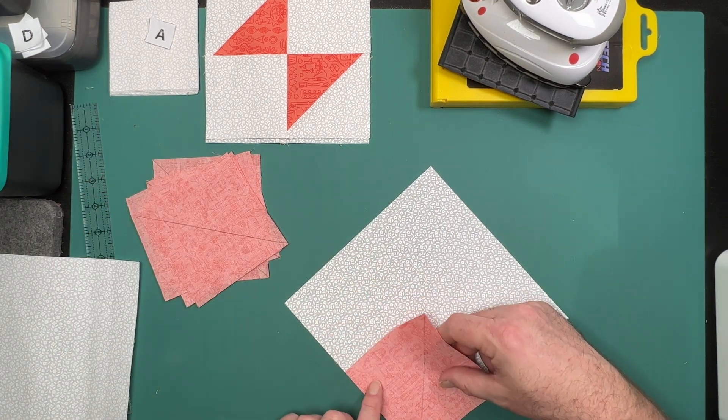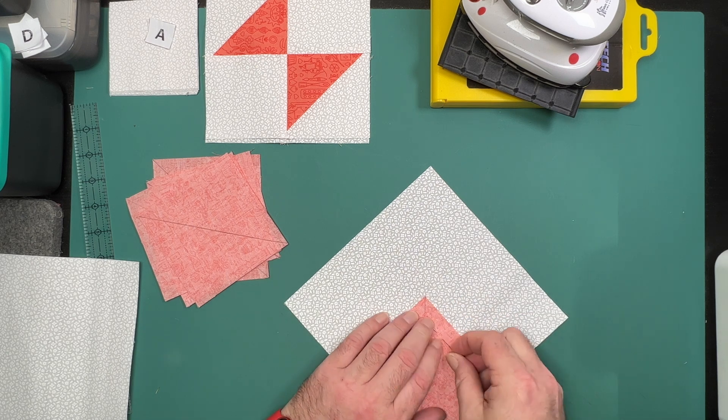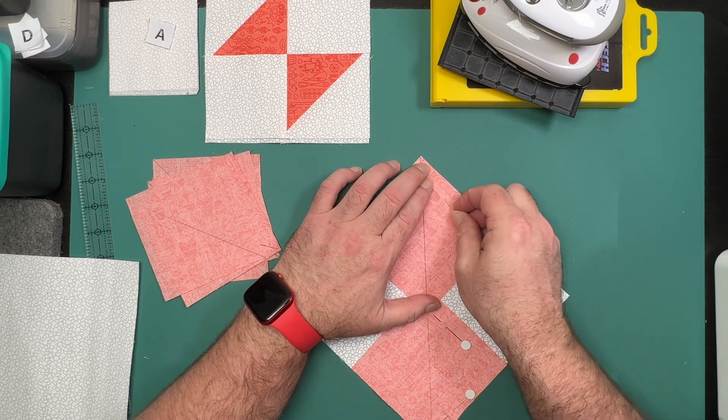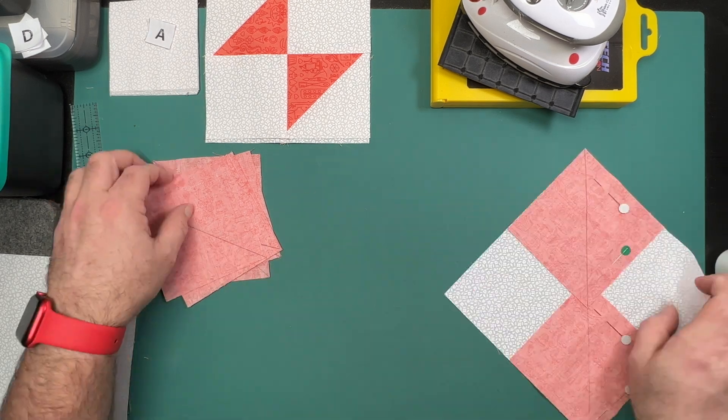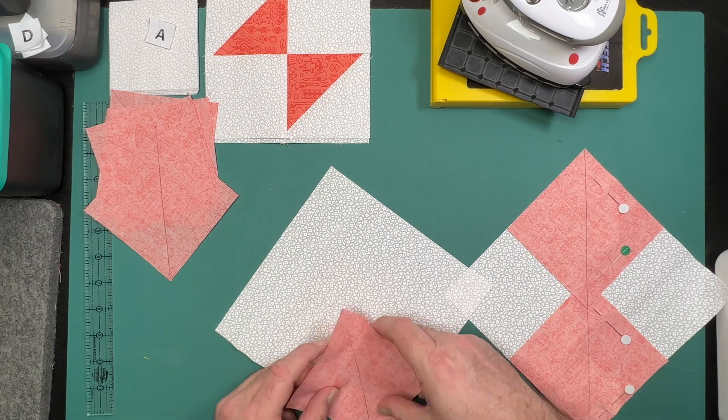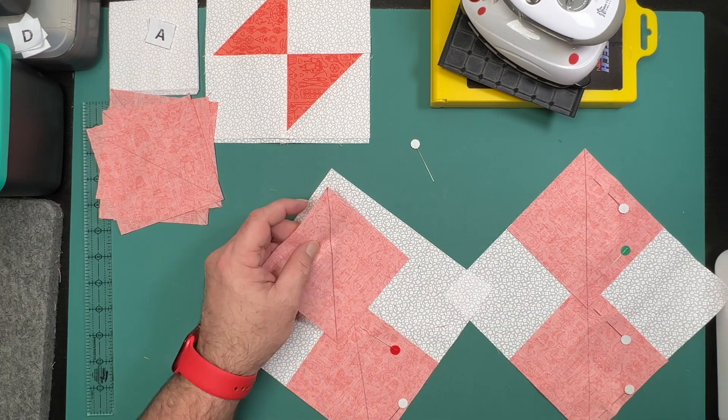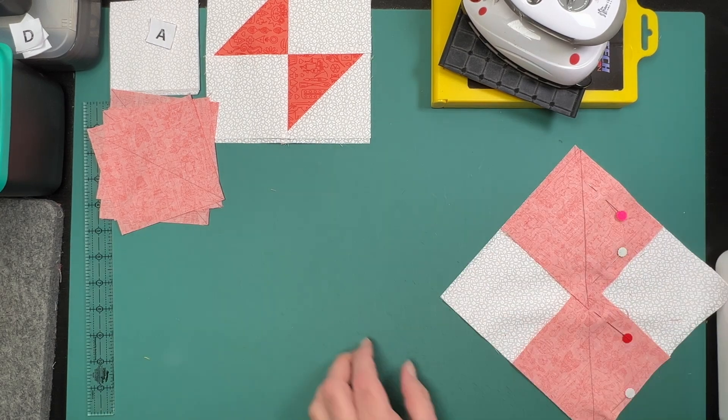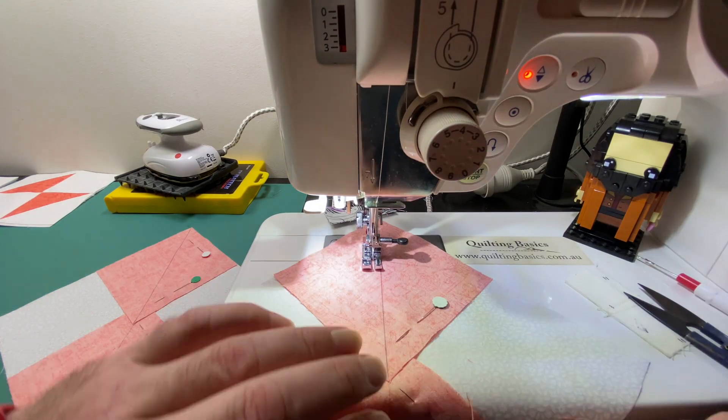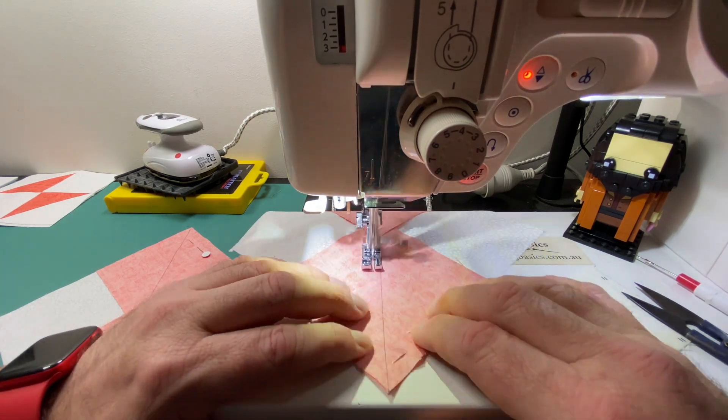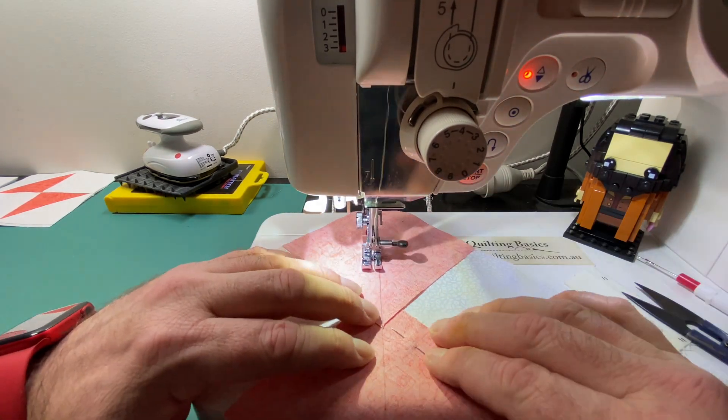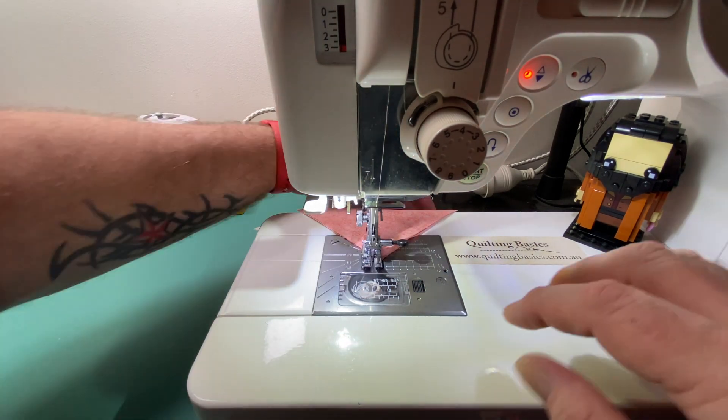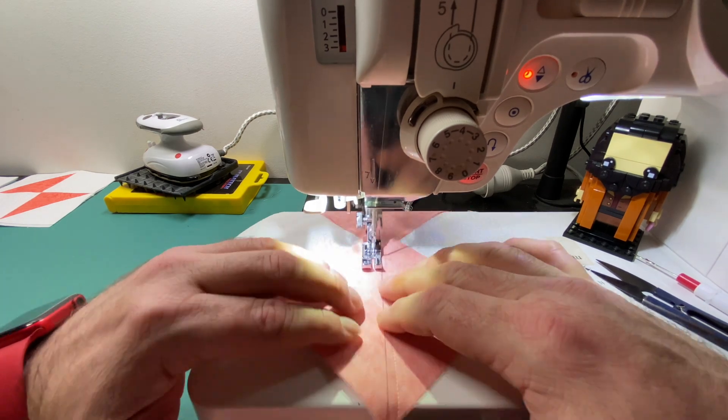We'll then take those to the machine and stitch a quarter of an inch on each side of the drawn line.